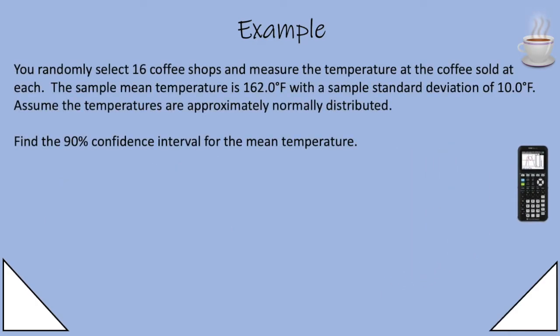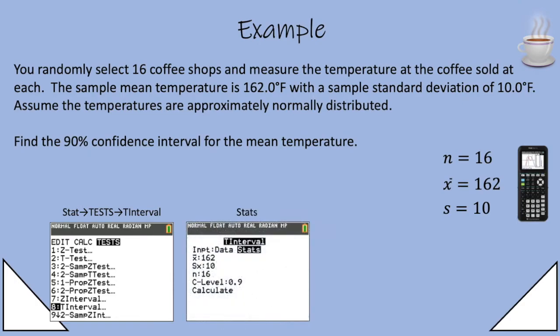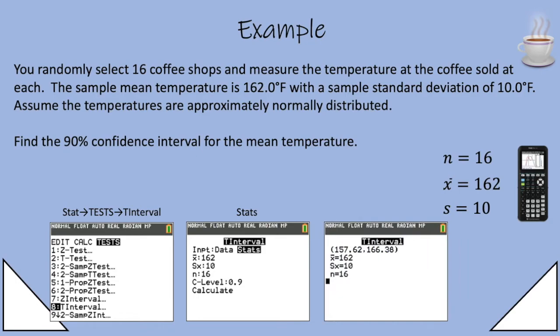Let's first find the 90% confidence interval for the mean temperature. So we know that n is 16, x bar is 162, sample standard deviation is 10. So on your TI-83 or 84 you're going to go to stat tests and scroll down to T interval. Under stats you'll plug in what you know and hit a confidence level of 0.9 and then just hit enter, and there we have it, a confidence interval of 157.62 to 166.38.